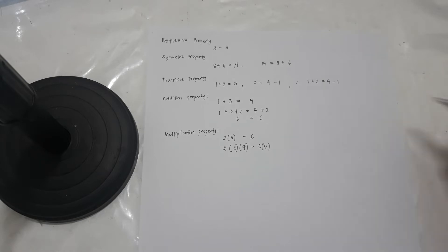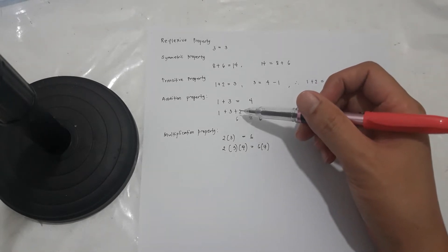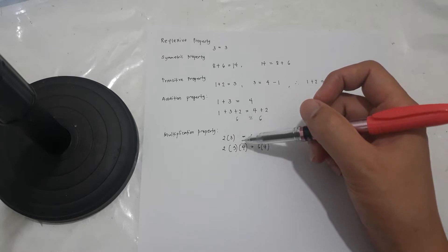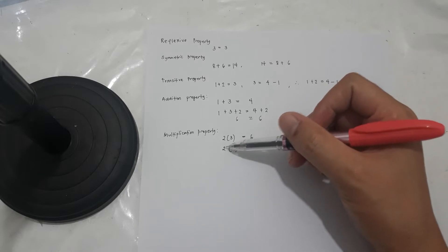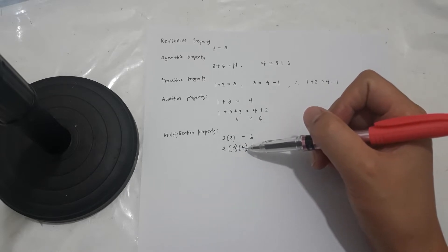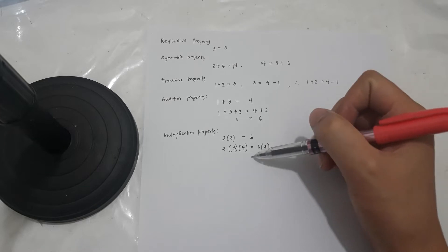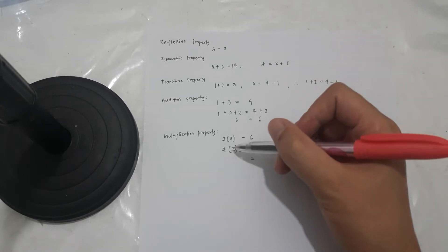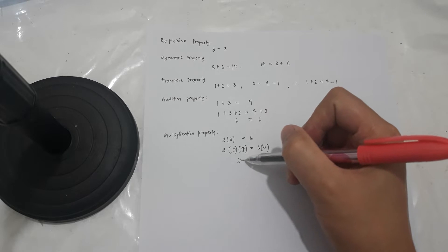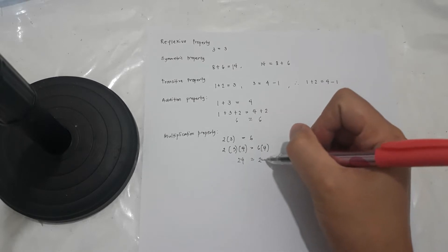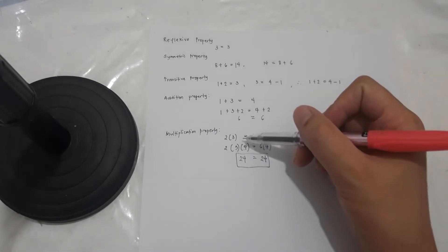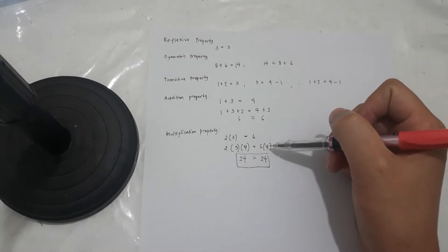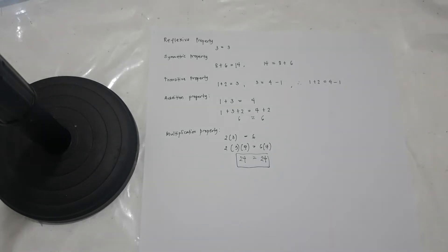The last one is the multiplication property, which is almost the same as addition except it is multiplication. For example, 2 times 3 is equal to 6. If you multiply 4 on both sides, the answer should still be equal — 2 times 3 times 4 is 24, and 6 times 4 is also equal to 24. So you need to multiply by the same number on both sides. You need that in order to solve linear equations.